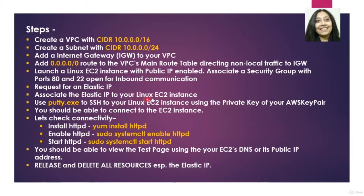For this demo, we will be launching a Linux EC2 instance. I've added a few more steps to SSH into the Linux EC2 instance using PuTTY. Since this is a public EC2 instance with an associated elastic IP, we will ensure internet connectivity, install HTTPD, enable HTTPD, and start the HTTPD service. Once started, we will view the test page using the EC2 instance's public IP address — which will be its elastic IP.